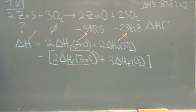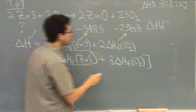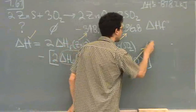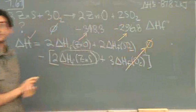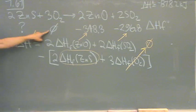Delta H of formation of the O2. That one's going to be zero. Right here. Zero. There we go. We solved for our unknown.